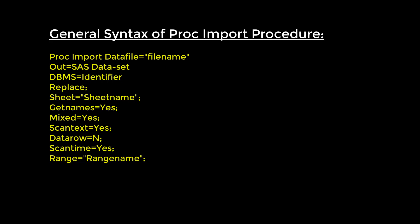REPLACE is used to override the existing SAS data set mentioned in the OUT statement. So if you have already created a particular data set and now want to replace it after reading new data, you can use the replace option and it will override that particular file. The SHEET option is used to specify which sheet SAS should import from the Excel file, allowing you to import a particular sheet when there are multiple sheets.